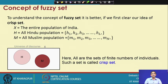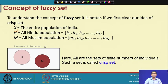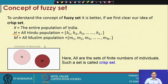The traditional set that we know is in fact a crisp set. For example, say X denotes a crisp set and it denotes the entire population of India. Then yourself, myself, or other individuals are elements that belong to the set X. I can derive one set again from X — suppose it is H. H is another set denoting all Hindu population. Any person belonging to this set satisfies the characteristic of being Hindu. For example, H1, H2, H3 are all elements in this set.